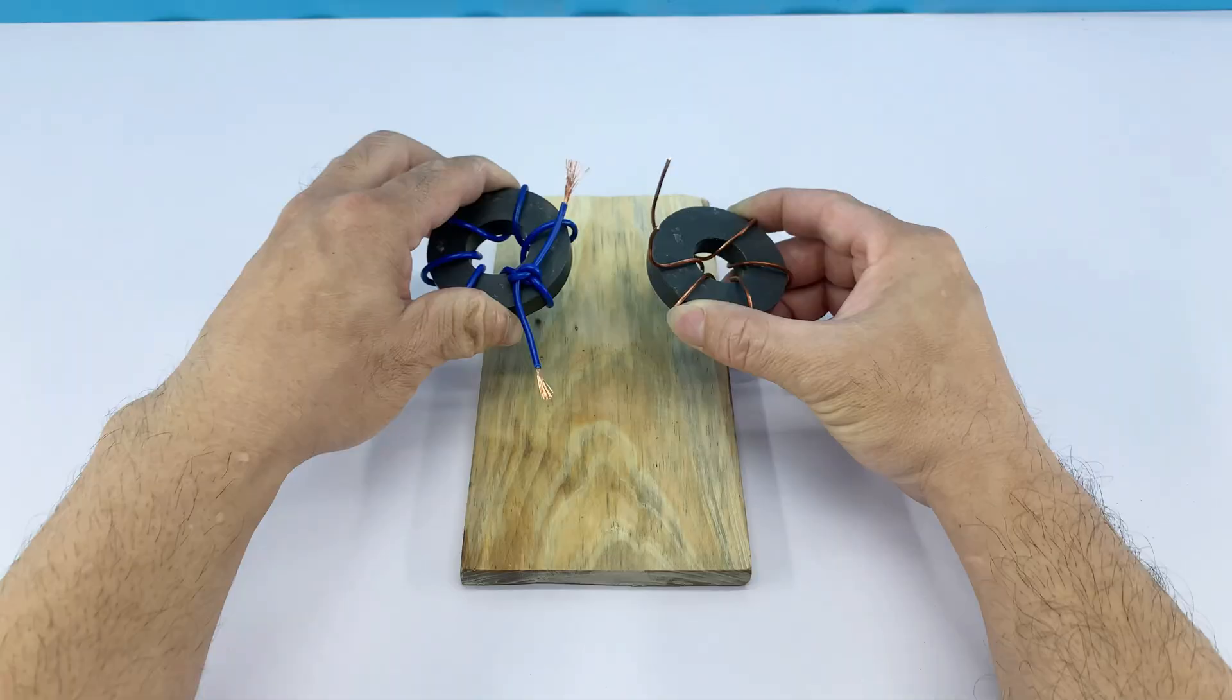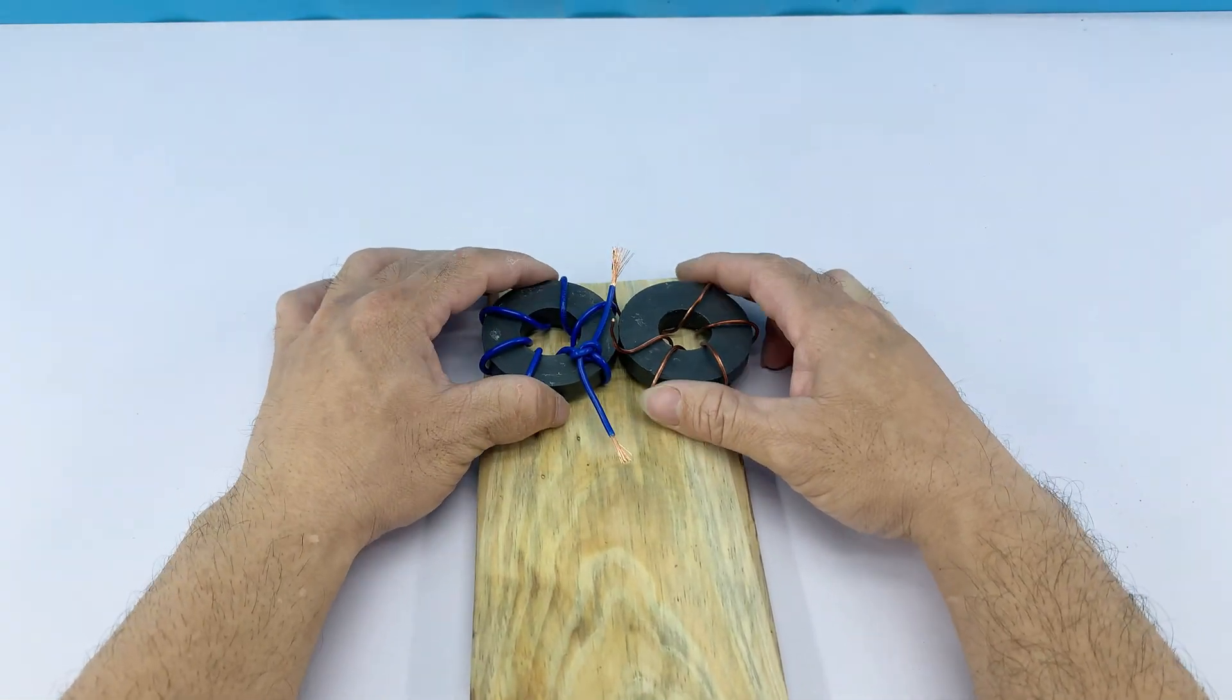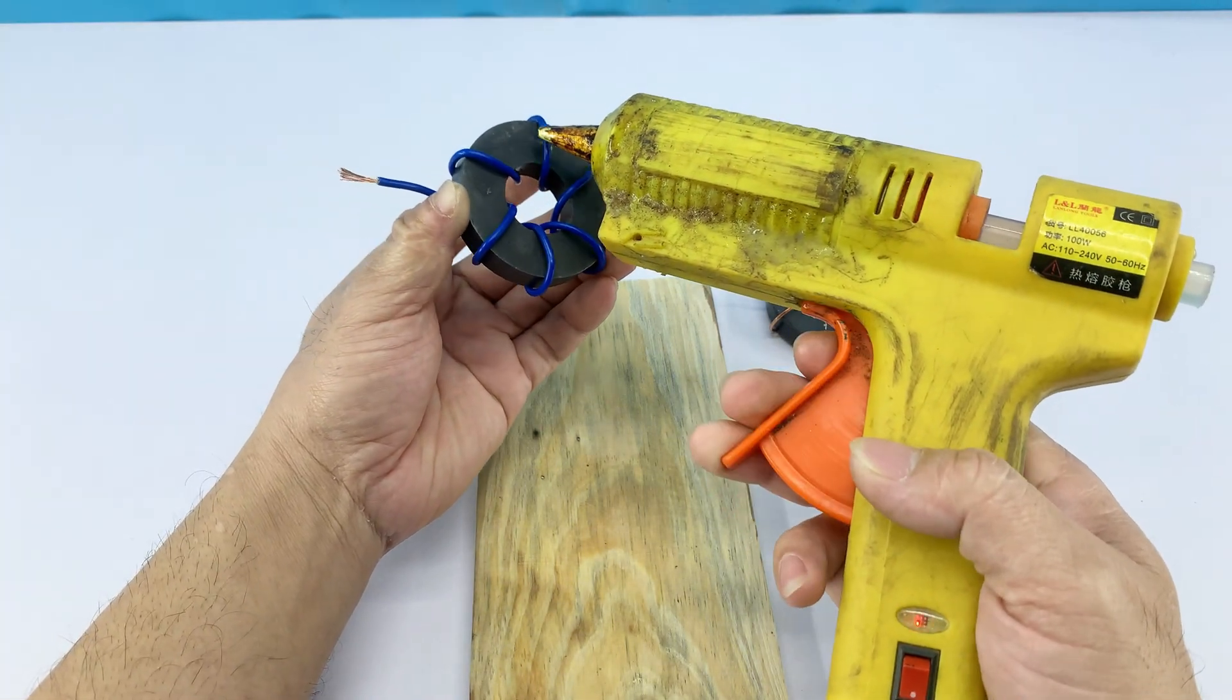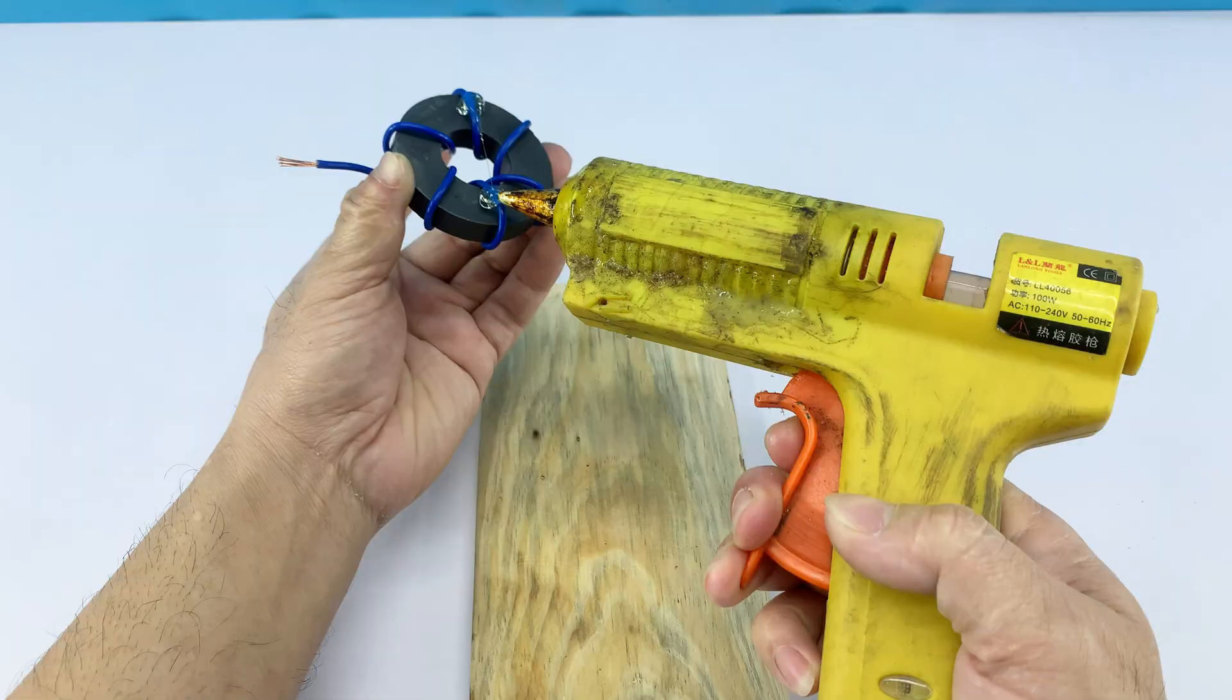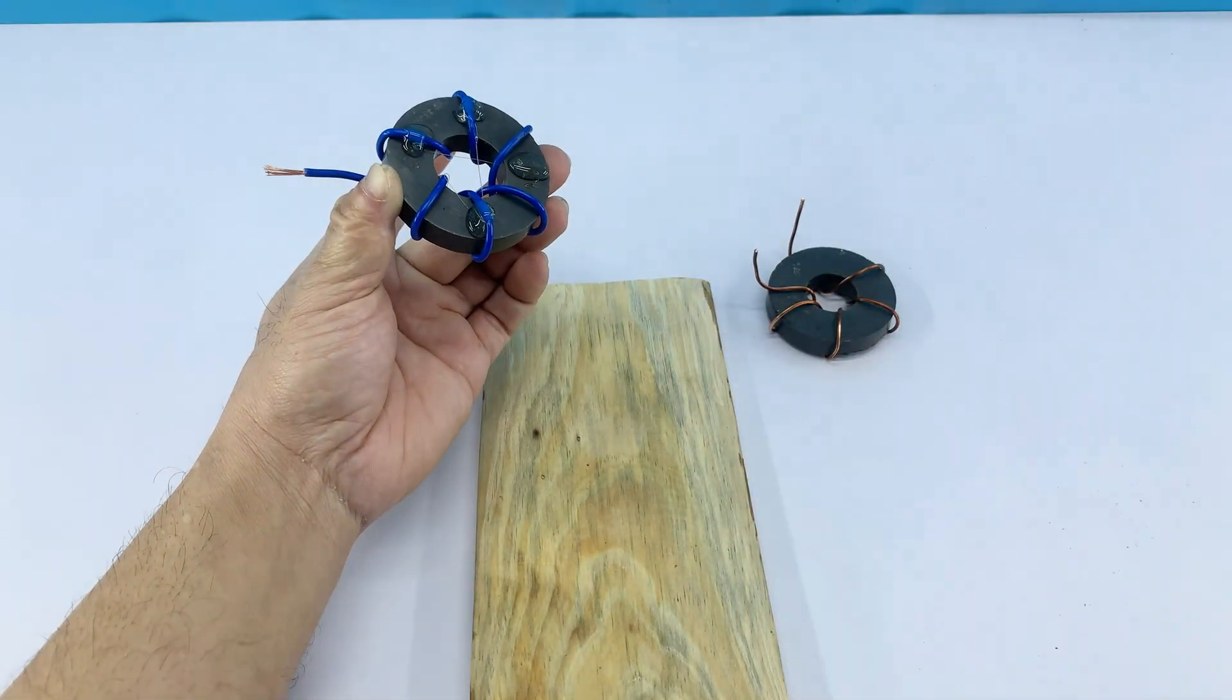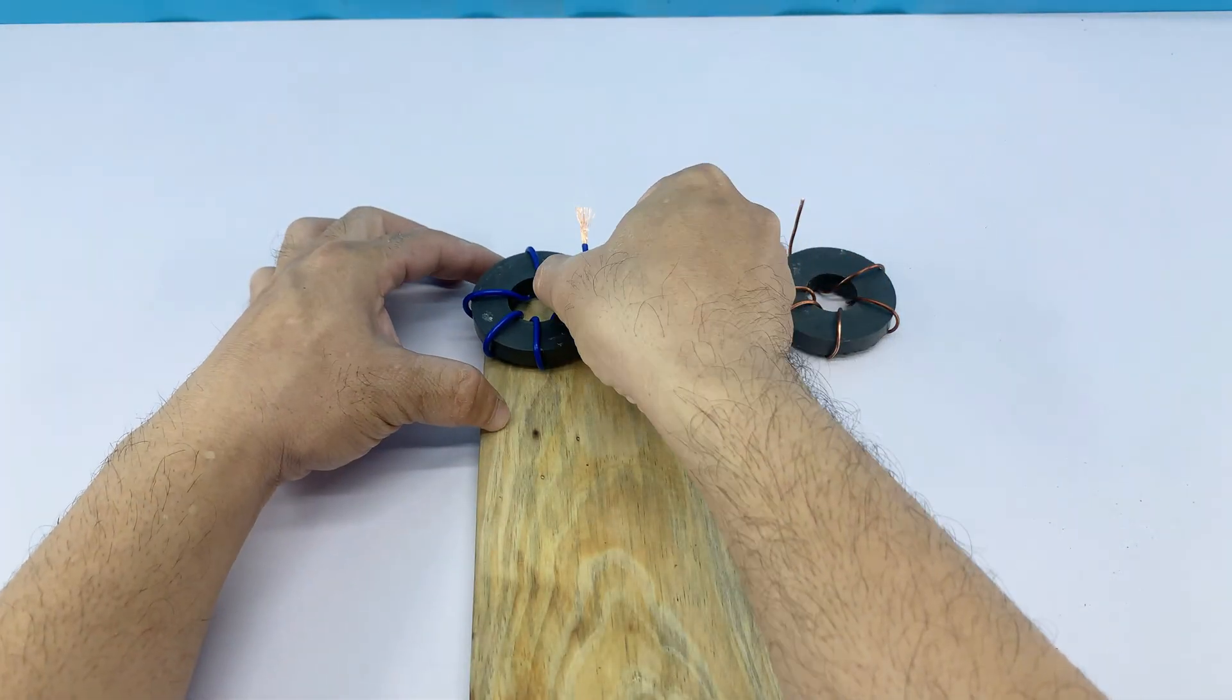Now that both coils are ready, I'm attaching them to a sturdy wooden base. I'll use a hot glue gun to firmly secure each coil in place. This provides stability for the entire assembly, preventing any movement that could disrupt the delicate wiring or reduce the efficiency of the magnetic field interaction.